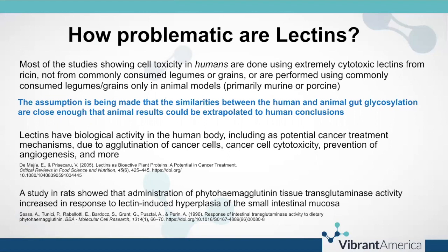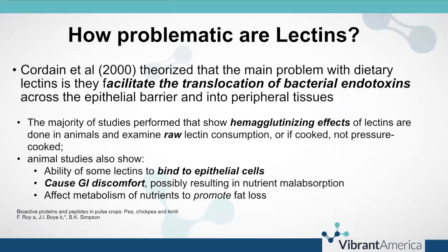A study in rats showed that administration of phytohemagglutinin increased tissue transglutaminase activity and response to lectin-induced hyperplasia of the small intestinal mucosa. In animal models, we see that lectins can bind to small intestinal epithelial cells and cause inflammation. What's more likely in human contexts, and what we do see in human studies, is that lectins can facilitate translocation of bacterial endotoxins across the epithelial barrier. Seeing antibodies to wheat germ agglutinin on the wheat zoomer is possibly more an indication of intestinal permeability than lectin sensitivity.